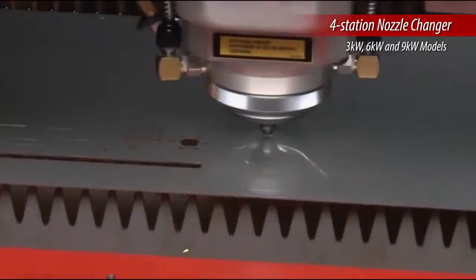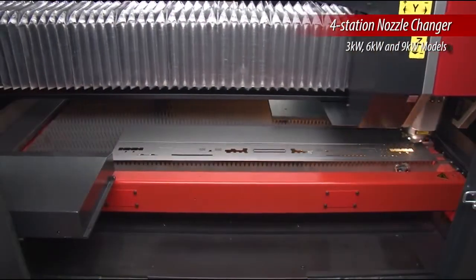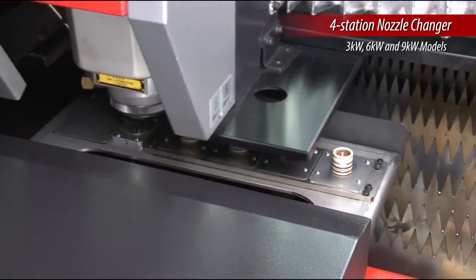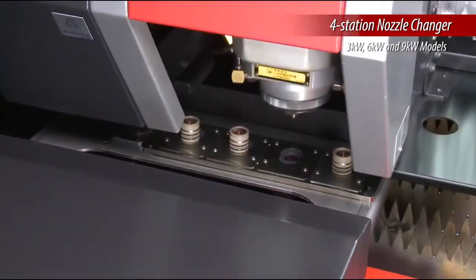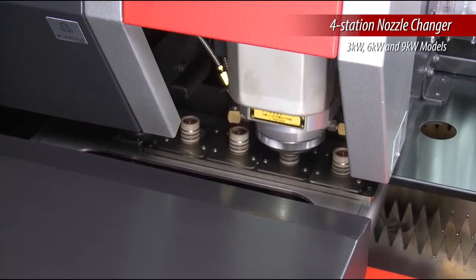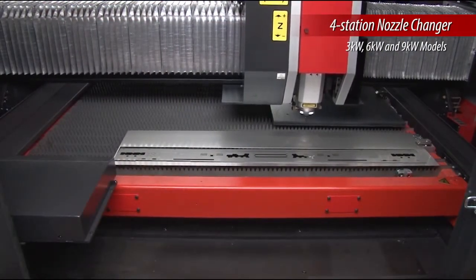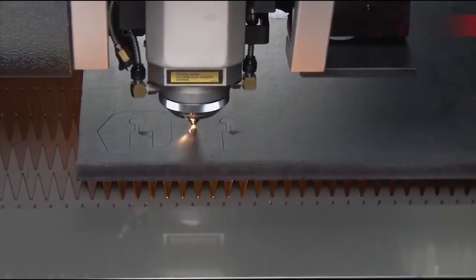To further increase the machine's productivity, the LCG-AJ is equipped with a four-station nozzle changer. In less than a minute, the current nozzle is cleaned and a new nozzle is selected and calibrated. This process is performed automatically based on the cut condition selected on the machine's control.